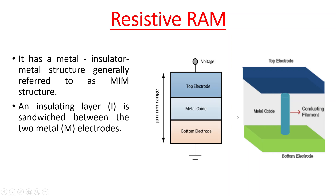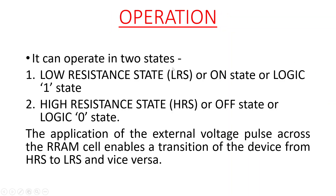The operation of the resistive RAM is basically in two states: one is called the low resistance state or LRS, and the other is called the high resistance state or HRS. The application of an external voltage pulse will enable a transition from LRS to HRS and vice versa.